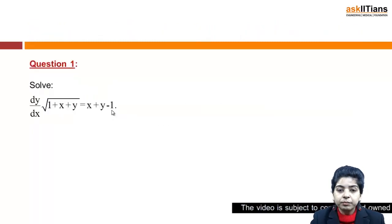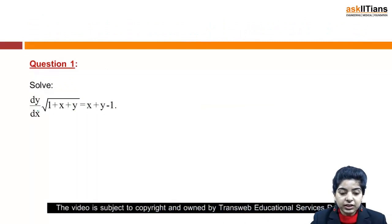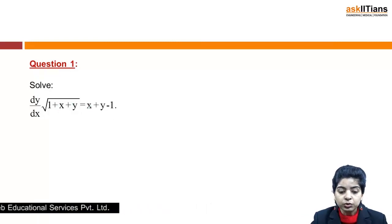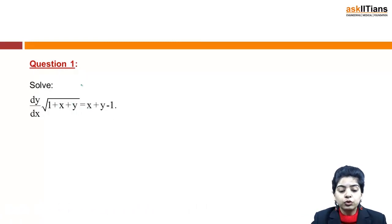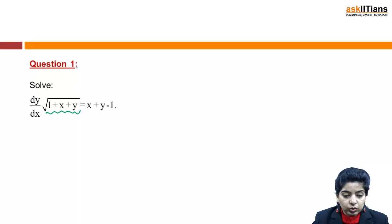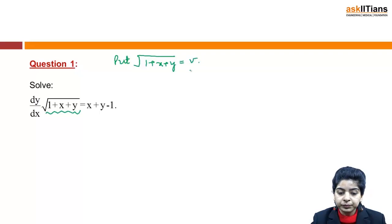We have a question based on this form: dy/dx · √(1 + x + y) = x + y - 1. We need to solve this equation. First, since we have a square root, I use the substitution: put √(1 + x + y) = v to simplify this equation.